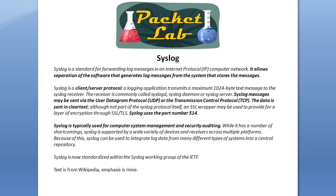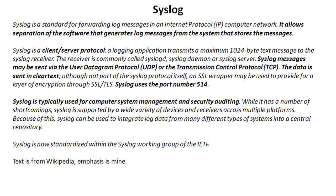First things first, let's define what Syslog is. Basically, Syslog is an industry standard client-server protocol. It's used to send Syslog messages — you might refer to these as error messages — from a sender to a receiver, basically from a client to a server. Using UDP in the Cisco world by default, it's going to use UDP on port 514.